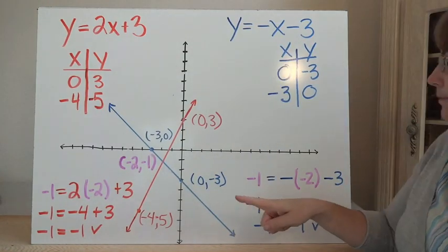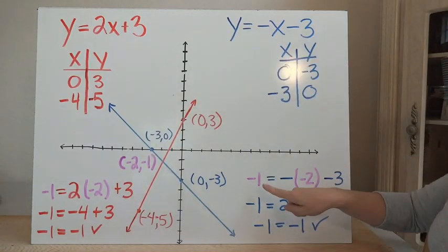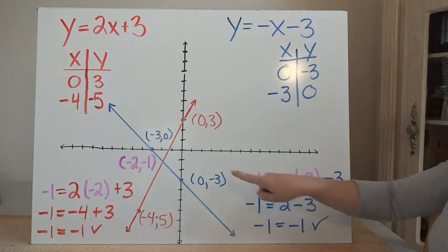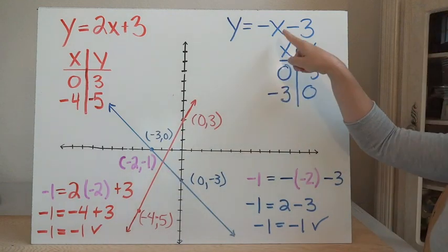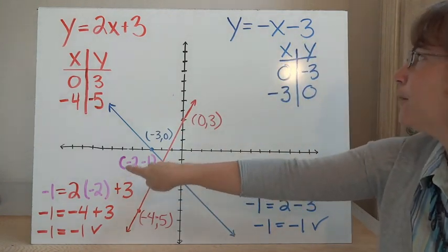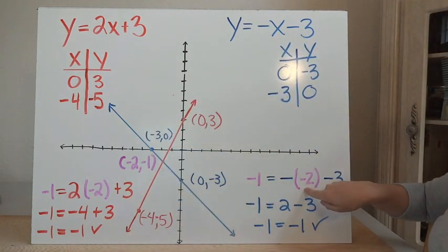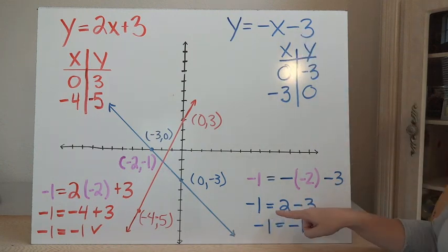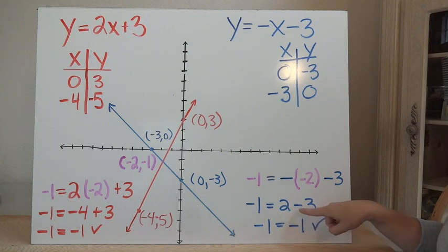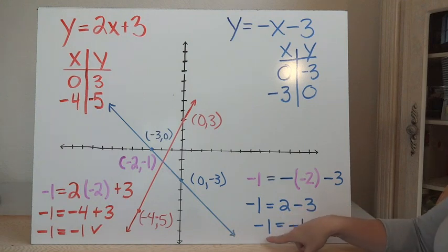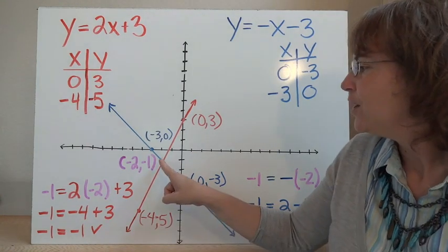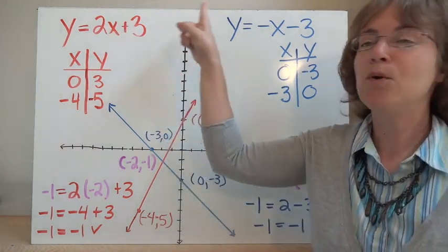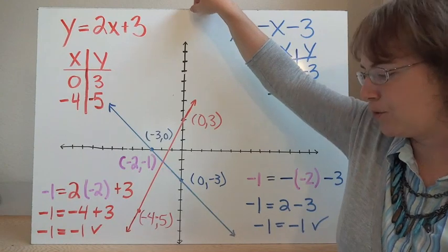Now let's check the second line. I put negative 1 in for y and negative 2 in for x. I have negative 1 equals negative of negative 2, which is positive 2, minus 3. So negative 1 equals 2 minus 3, which is negative 1 equals negative 1. That checks out as well. So the coordinate point (negative 2, negative 1) makes both linear equations true.